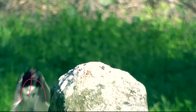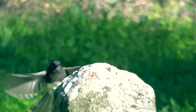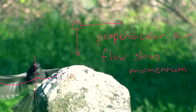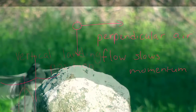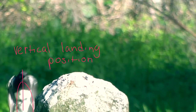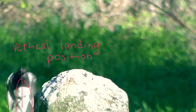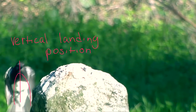This next frame is also fairly simple, and as we can see by this slide, it shows that the wings are poised downwards. The wings open up to provide the lift that it needs to get onto the rock, and you can see that the airflow is perpendicular to the wings so that the bird slows its momentum. Finally, we have this vertical landing position where the bird can poise itself to land on its feet.